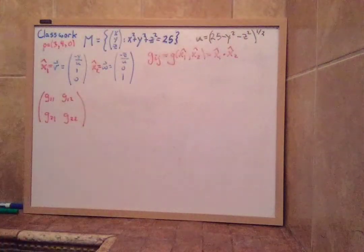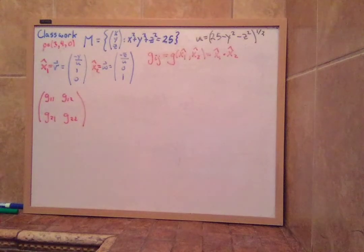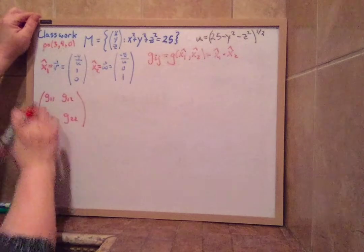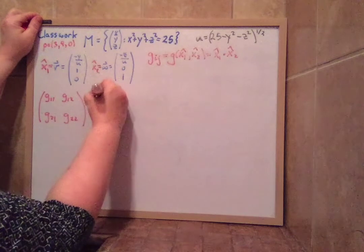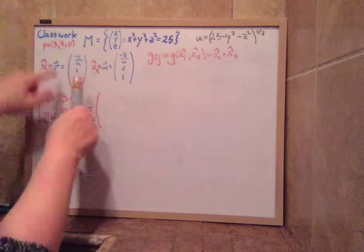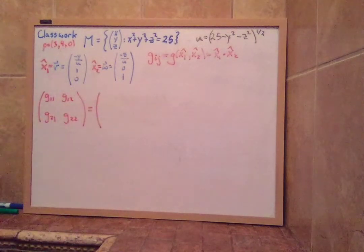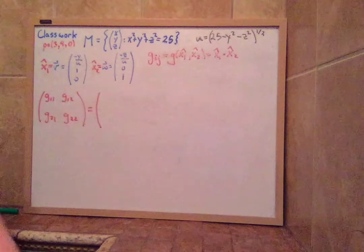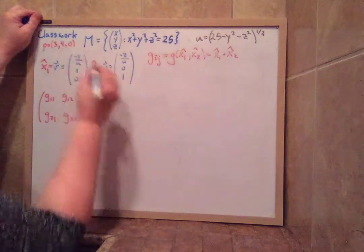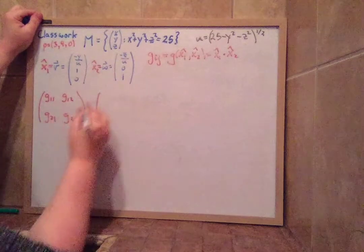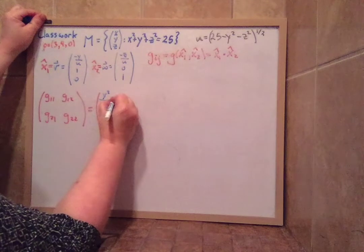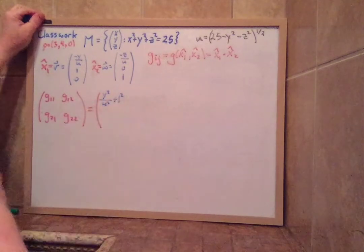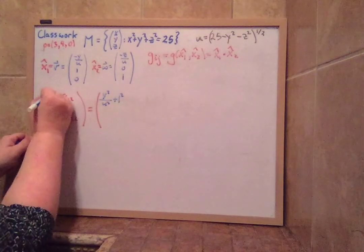So we're not going to be using this point yet. This has to depend on the location. Our g11 can be found by taking this guy dotted with himself. And so when we do v dotted with himself, I end up with negative y over u times negative y over u, which is y squared over u squared plus 1 times 1 plus 1 squared. That's the first entry, our g11.